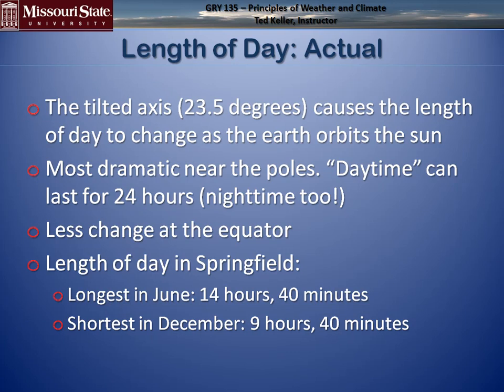For example, the length of day in Springfield at the June solstice is approximately 14 hours and 40 minutes, while during the winter solstice in December it's 9 hours and 40 minutes — a change of about 5 hours.